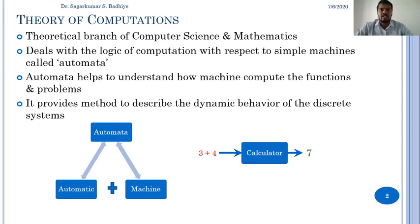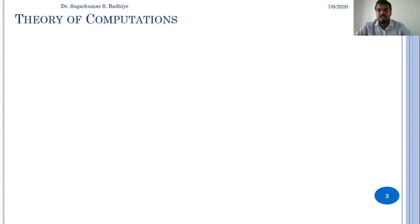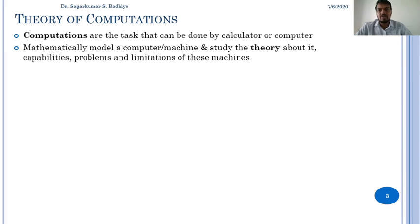This kind of machine are called automata. In theory of computations, we are going to study computations. Computations are the task that can be done by calculator or computer. We are also going to mathematically model a computer machine and study the theory about it.